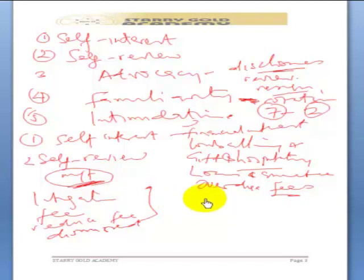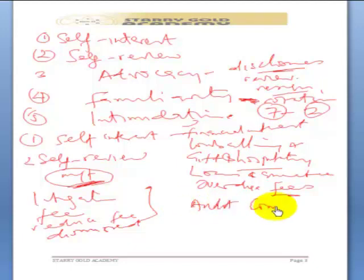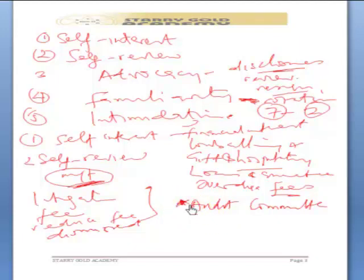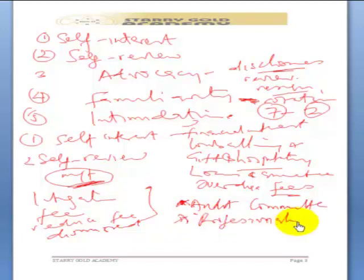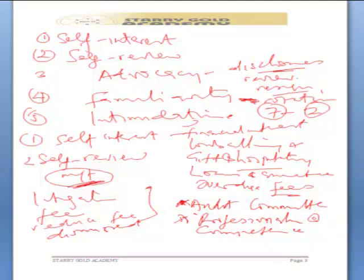The safeguards against intimidation threats include: having an open channel to the audit committee — remember the audit committee is made up of members including shareholders and directors — so you expect a level of independence from the audit committee. You need to have an open channel with the audit committee to make disclosures about anything you are going through. Another safeguard is professionalism and competence — when you know you have done the right thing and done your job according to best practices, it will be difficult for someone to intimidate you.